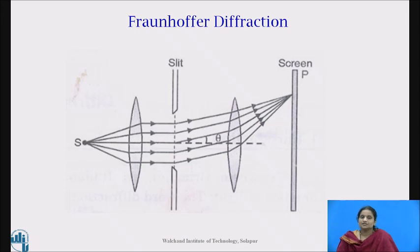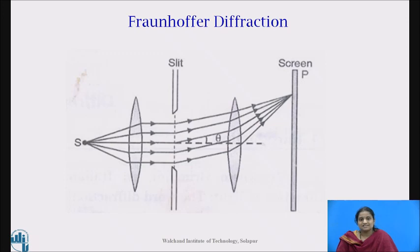In Fraunhofer diffraction, the source of light and a screen are effectively at infinite distances from the obstacle. The conditions required for Fraunhofer diffraction are achieved by two convex lenses — one to make the light from the source parallel, and the other to focus the light after diffraction onto the screen. The incident wavefront is plane, and the secondary wavelets which originate from the unblocked portions of the wavefront are in the same phase at every point in the plane of the obstacle. The diffraction is produced by interference between parallel rays, which are brought into focus with the help of a convex lens. This problem is simple to handle mathematically as the rays are parallel.